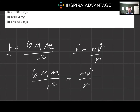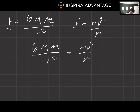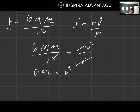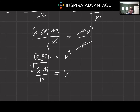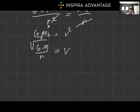Let's simplify and cancel. We have an R on both sides, so cancel one R. We also have mass M on both sides, so cancel that. Rewriting what we have: G·M2 equals v squared. Solving for velocity, we take the square root: v equals the square root of G·M over R. From here we just plug in our values.